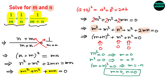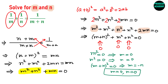Is this the solution? Let us check the initial problem: 1 by M plus 1 by N. If M is 0, then 1 by M will be undefined — it tends towards infinity. So M cannot be 0. Therefore, this solution is not valid, and there is no solution possible for this expression.